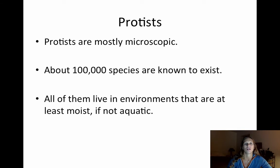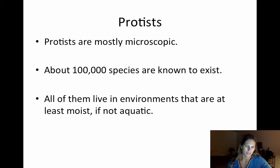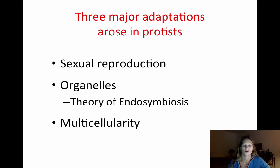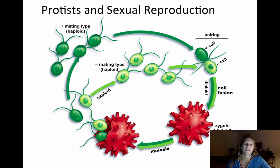There's a ton of these protists — they're super small, and all of them live someplace wet, maybe just a little bit wet or maybe purely aquatic, but they need moist environments. There were three major adaptations that arose in protists that we hadn't seen in either bacteria or archaea before. One is the ability to reproduce sexually as opposed to binary fission. The second is the acquisition of organelles, which I just talked about. And the third is the ability to be multicellular — not all protists are multicellular, there are some unicellular ones, but a vast majority of them are multicellular.